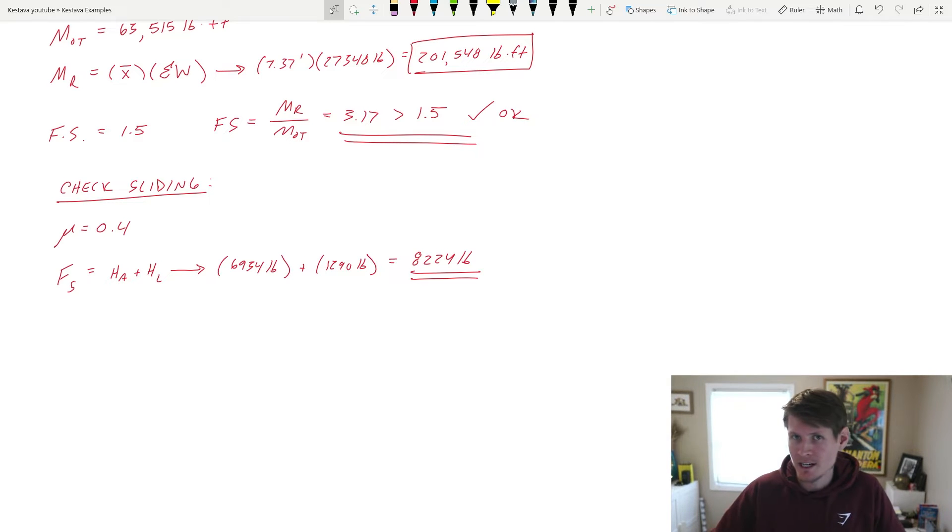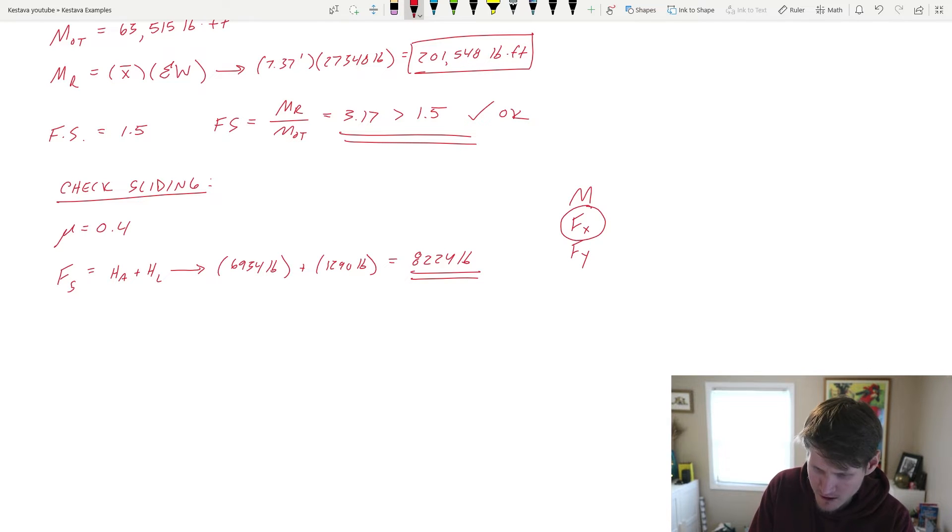We don't take into consideration any type of moment arms because we're not doing moment anymore. We're just doing sliding. So we are actually just doing, from our equilibrium equations, moment F sub X and F sub Y. Sliding is really the check for F sub X.